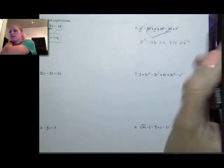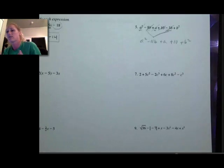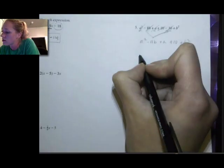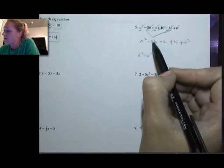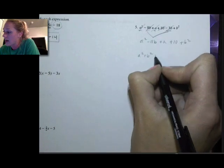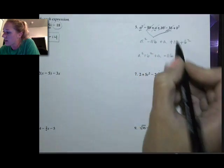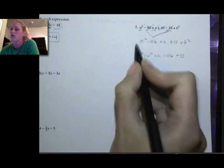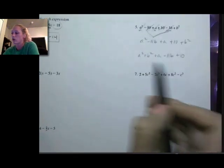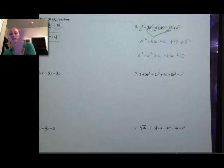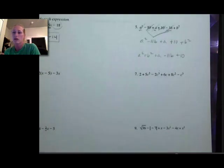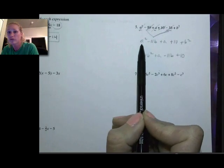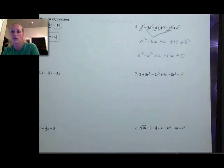Some people will ask about the order. Typically in standard notation we like to put the higher exponents first. So I have a squared plus b squared, then variables without exponents: a and then minus 11b, and then plus 10. Both orderings are correct — this is just a notational convention where we tend to go from highest exponent down to no exponents, with constants at the end. As long as your like terms have all been combined and your signs are correct, that's all that matters.